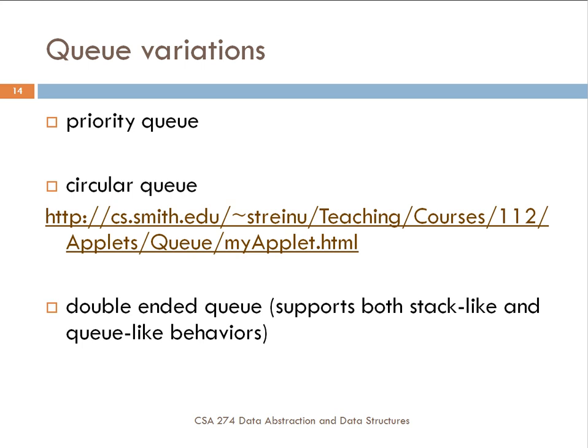So you have two different lines — the regular line and the fast pass lane — and that scheme is sort of based on a priority queue. Another type of queue is a circular queue, mentioned in the textbook. A circular queue is a way to implement a queue with an array so that you don't have to continually build large lists, though you are limited by the array size you've implemented.